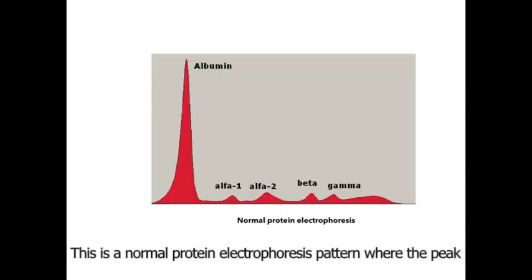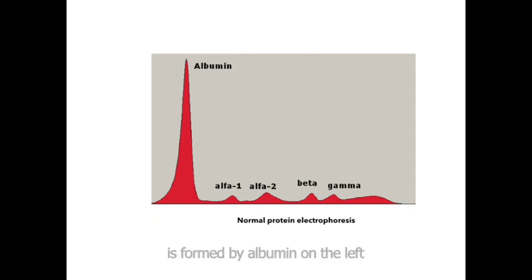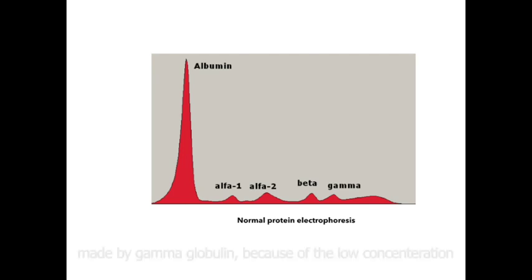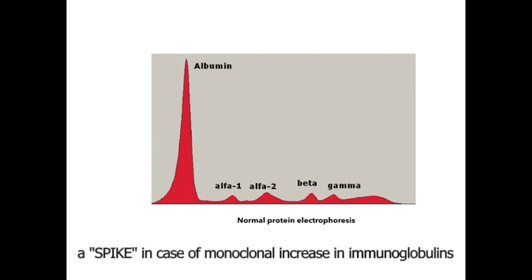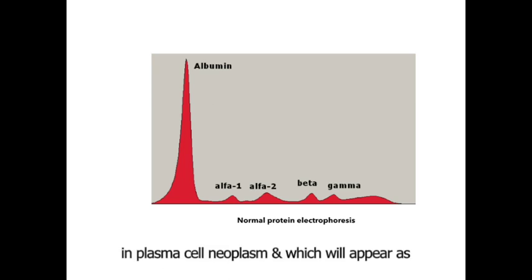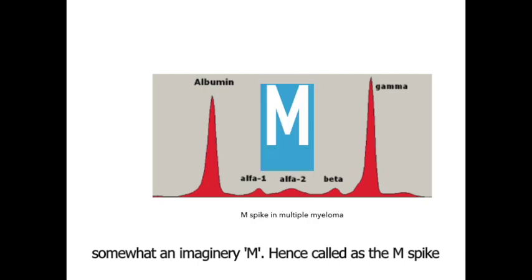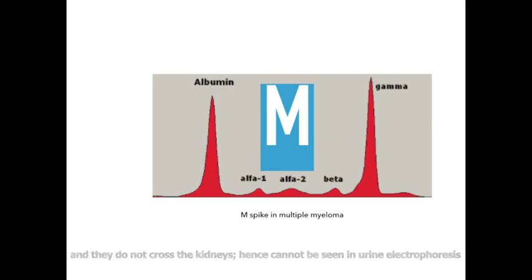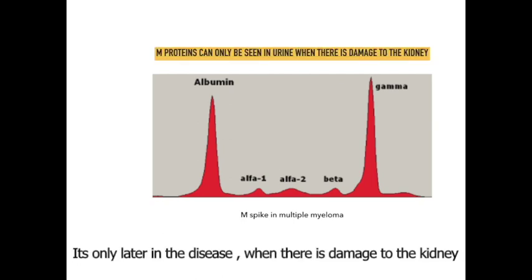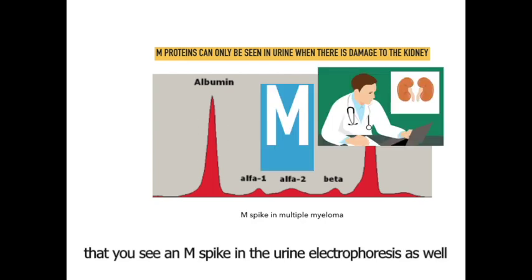This is a normal protein electrophoresis pattern where the peak is formed by albumin on the left, being the most abundant plasma protein, and on the extreme right you see a small bump made by gamma globulins or immunoglobulins because of the low concentration. In the case of an increase in plasma cells, the small bump will increase in size and form a spike in monoclonal plasma cell neoplasm, appearing as an imaginary M — hence called the M-Spike. These immunoglobulins are seen in blood since they are larger in size and do not cross the kidneys, hence cannot be seen in urine electrophoresis. It's only later in the disease when there's kidney damage that you see an M-spike in urine electrophoresis as well.